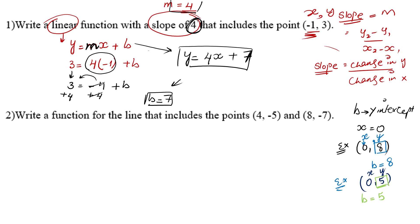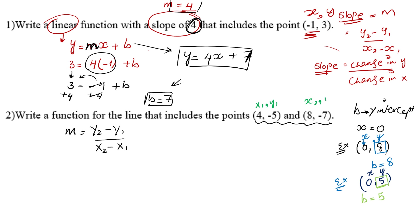If you do not understand, rewind and watch again. Next question: write a function for a line that includes this point. Notice that m is not given to us. When m is not given, we use the formula y2 minus y1 over x2 minus x1. Name any one coordinate as x1, y1 and the other as x2, y2.